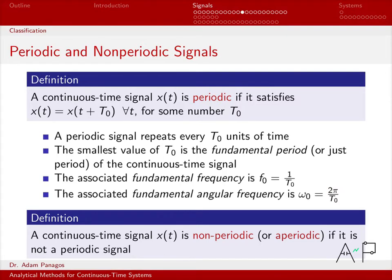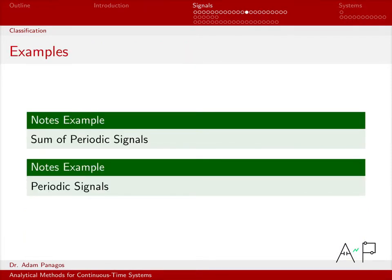So that's what a periodic signal is. If you cannot find some T₀ for your signal such that this is satisfied, or if you look at it and there's nothing repeating, there's no pattern, then we call that a non-periodic or aperiodic signal. So signals don't have to be periodic. Most signals are not, in fact. And we just call them aperiodic or non-periodic signals. All right, let's look at some examples.